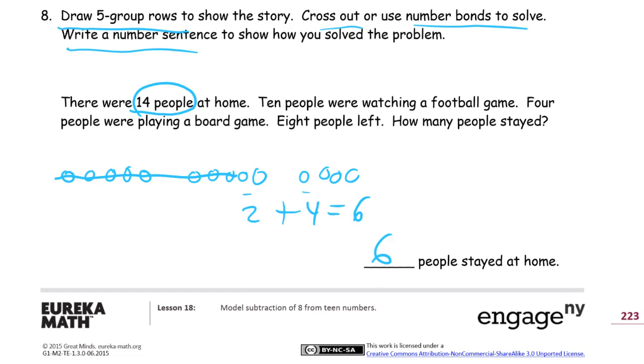And now I'm going to show how to do it with number bonds. So if we have 14 and 8 people leave, so we're taking apart the 14. Then we'll find out what the other part is. 14 is 10 and 4. When we take 8 away from the 10, there's only going to be 2 left. And then we add the 2 and the 4. It's the same thing. We're still going to end up with 2 plus 4, equaling 6. 14 minus 8 equals 6.